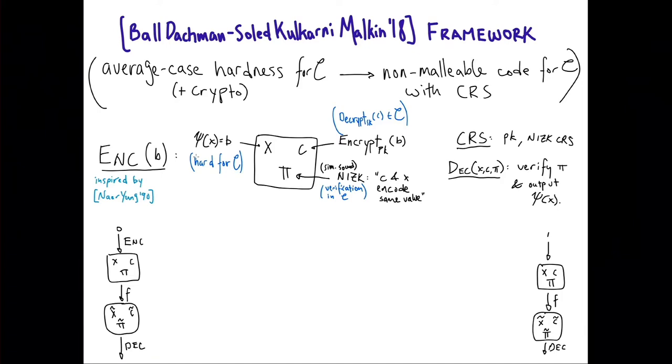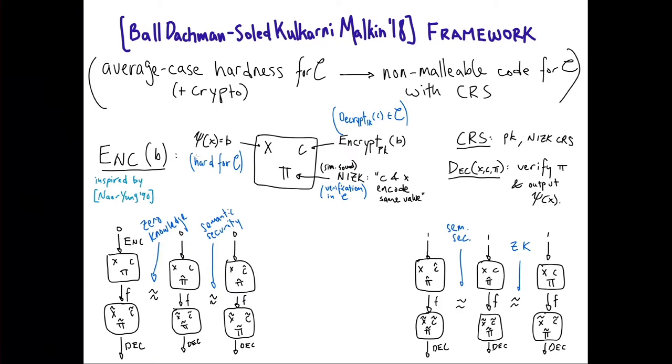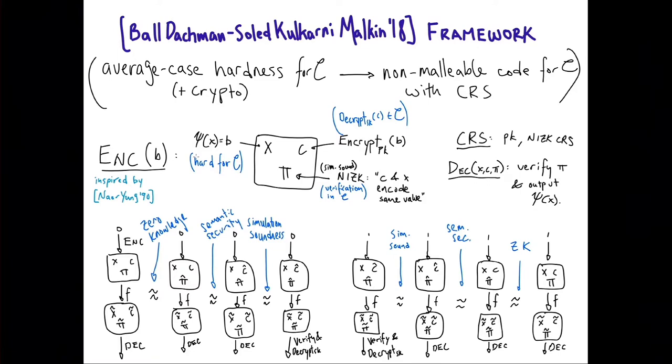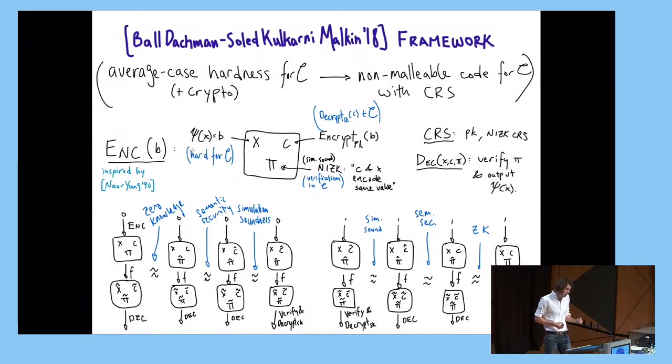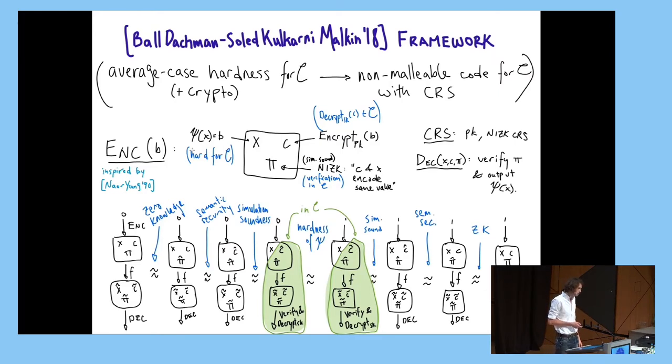So let me sketch the hybrid arguments. We have on the left an encoding of zero, and on the right, an encoding of one, or the experiments, the whole experiment. First, we're going to switch to simulated proofs using the zero-knowledge property of the NIZK. Then we use semantic security to switch to dummy encryptions. Then we apply simulation soundness, and we're going to apply simulation soundness to switch to a special alternate form of decoding, which is very low complexity. Using this secret key, where you can decode very efficiently by simply decrypting the ciphertext. Simulation soundness guarantees that this is okay. It won't change the output distribution. And now, we have that if we look at this, we can define this class of circuits that take in this input X, and this is in this low complexity class C. And because of that, we can deduce from the hardness of psi that these two things have to be indistinguishable.